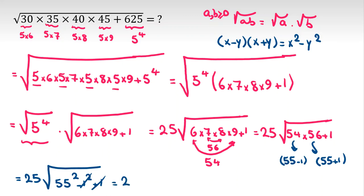This one squared, so it will be 25 times, let me write, times 55 squared. Square root of that is 55.